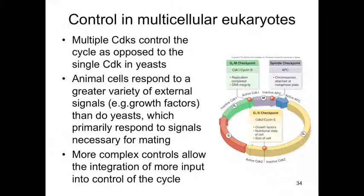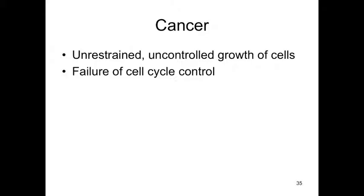Animal cells also respond to a greater variety of external signals — for example, growth factors that may tell cells to go on into the next phase. These more complex controls allow the integration of more input into control of the cell cycle. Cancer is about unrestrained, uncontrolled growth of cells; they go through mitosis much too regularly, and often they have damage. So cancer is due to failure of the cell cycle controls.